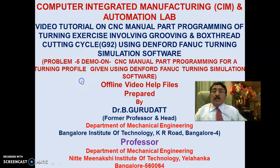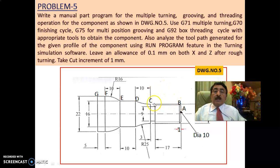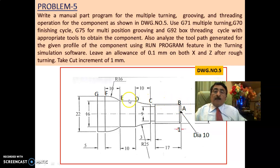In session 1 I will clearly explain how to do manual part programming for the given profile. This profile, unlike the previous problems, involves not only rough turning and finish turning, but also groove cutting and thread cutting in this cycle. I will explain exactly how manual part programming is done for this complex profile involving rough turning, finish turning, grooving, and box threading cycle.